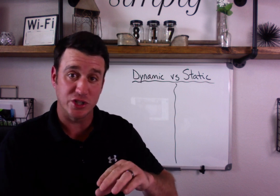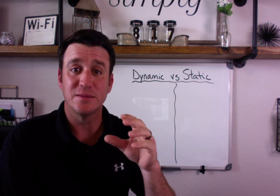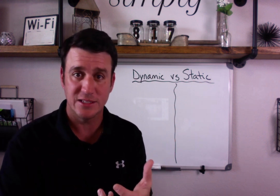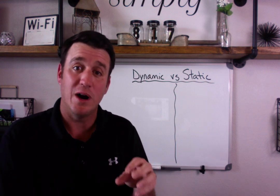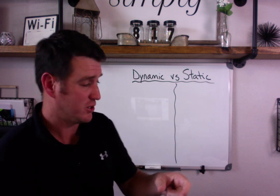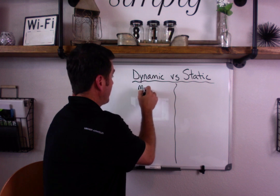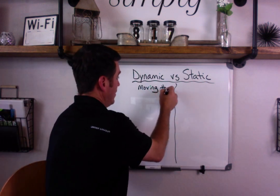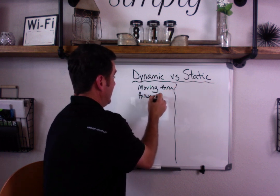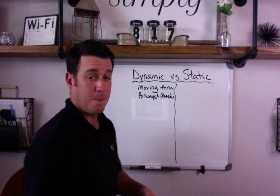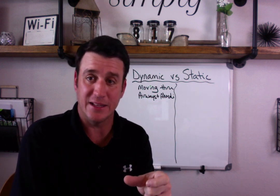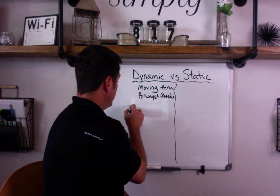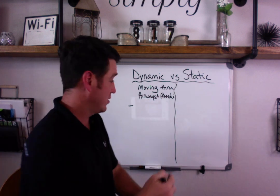Dynamic is the change in pressure per the set given tidal volume while the air is moving through airways — the endotracheal tube, the anatomical airways, and all the way down to the alveoli. What's happening while the air is moving results in our peak airway pressure. So dynamic means moving through airways and alveoli. What we get from dynamic compliance is what is the change in pressure while that gas is moving through the airways and the alveoli. We will use this: our peak inspiratory pressure — our PIP.